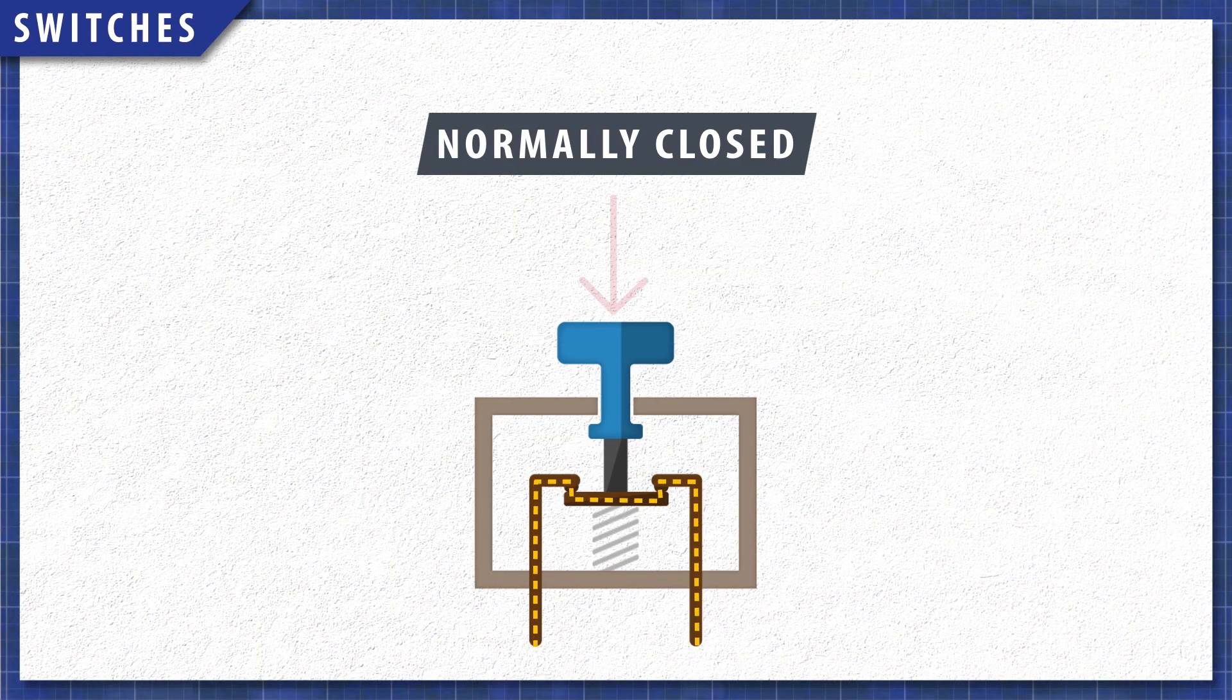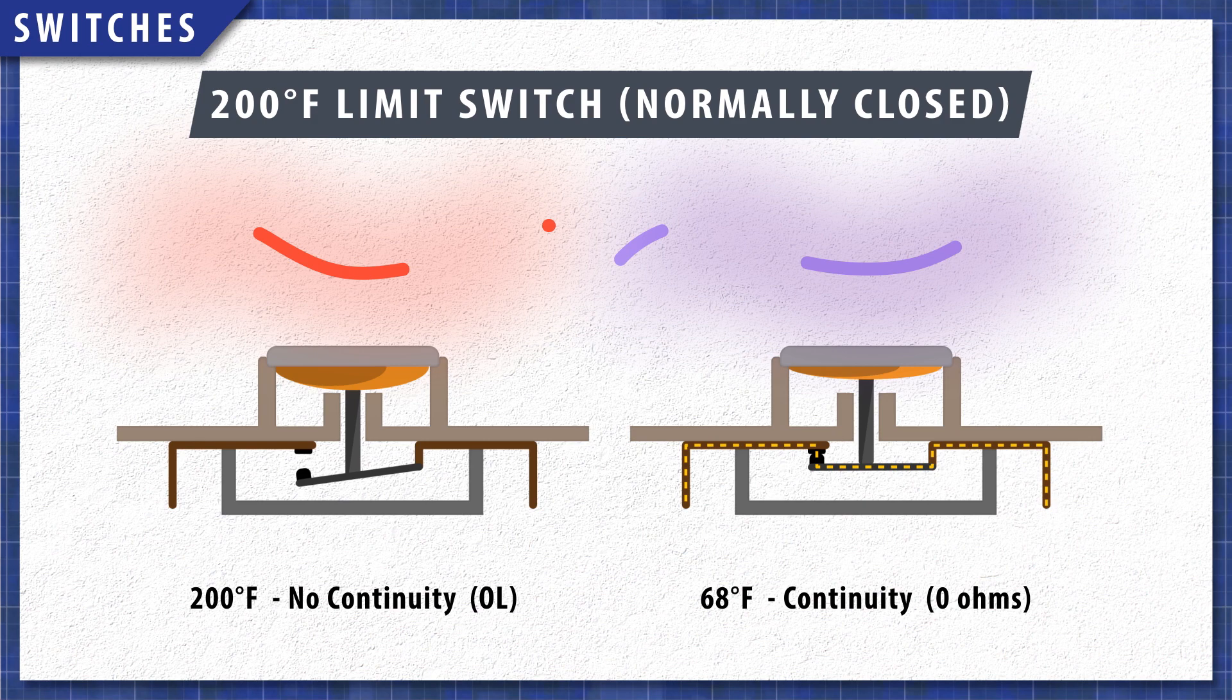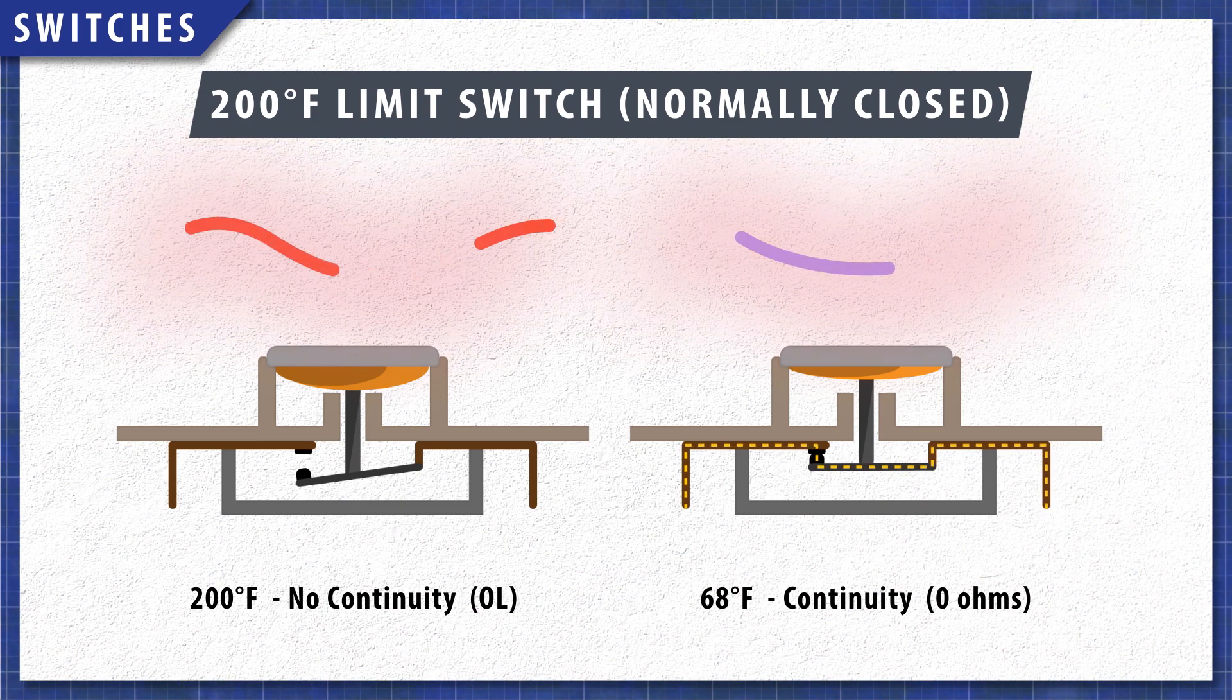Normally closed switches have continuity until the switch is opened. For example, a high limit switch rated to open at 200 degrees Fahrenheit will have continuity at room temperature.